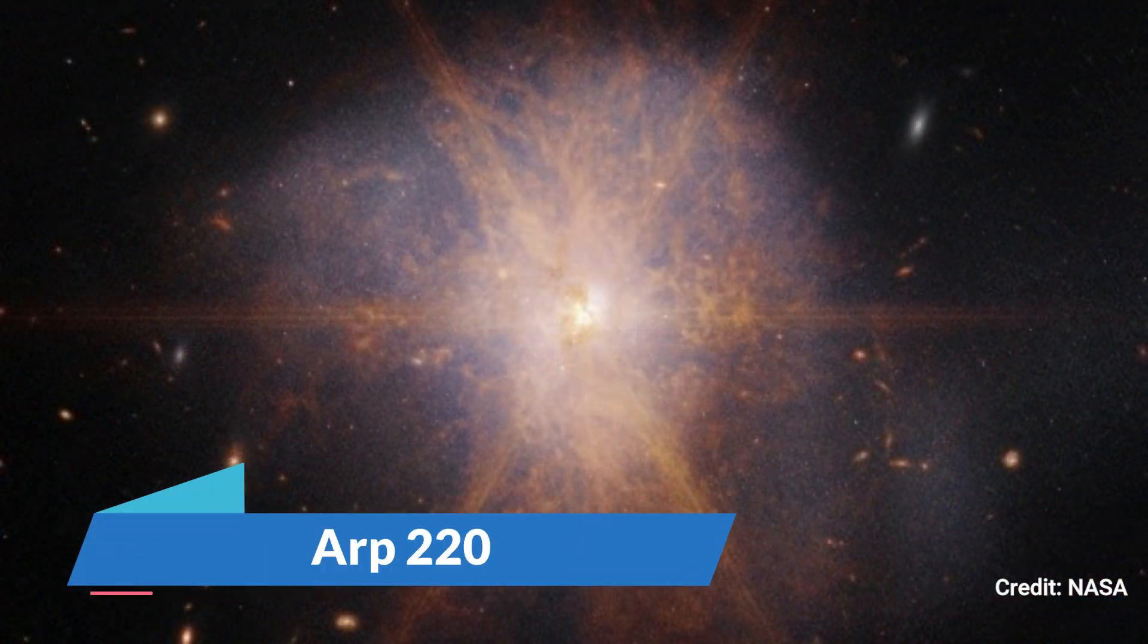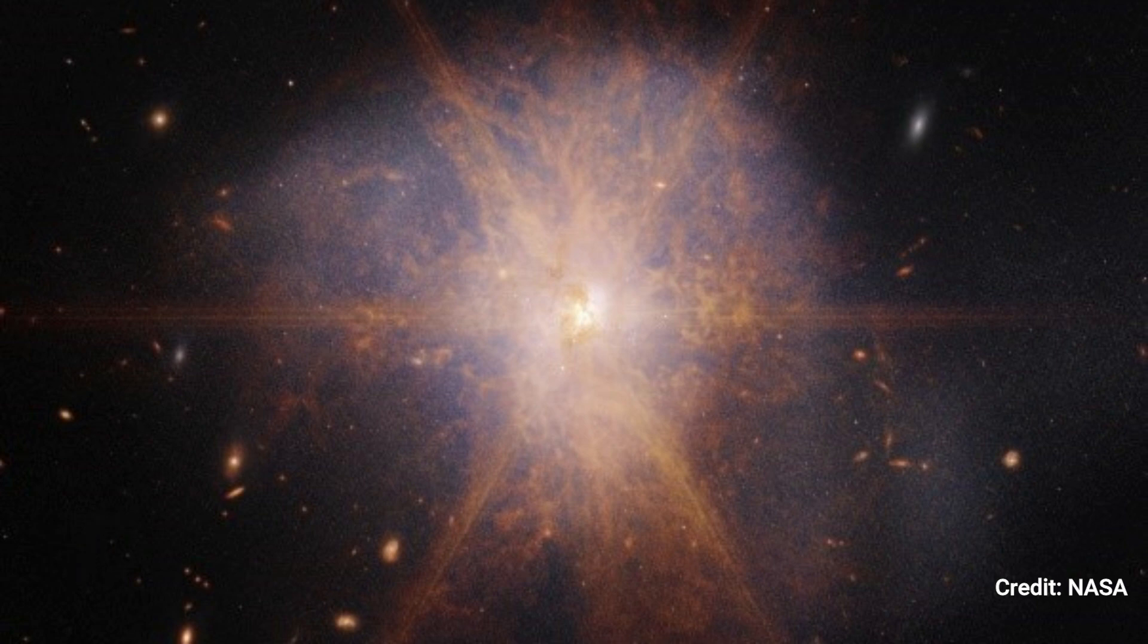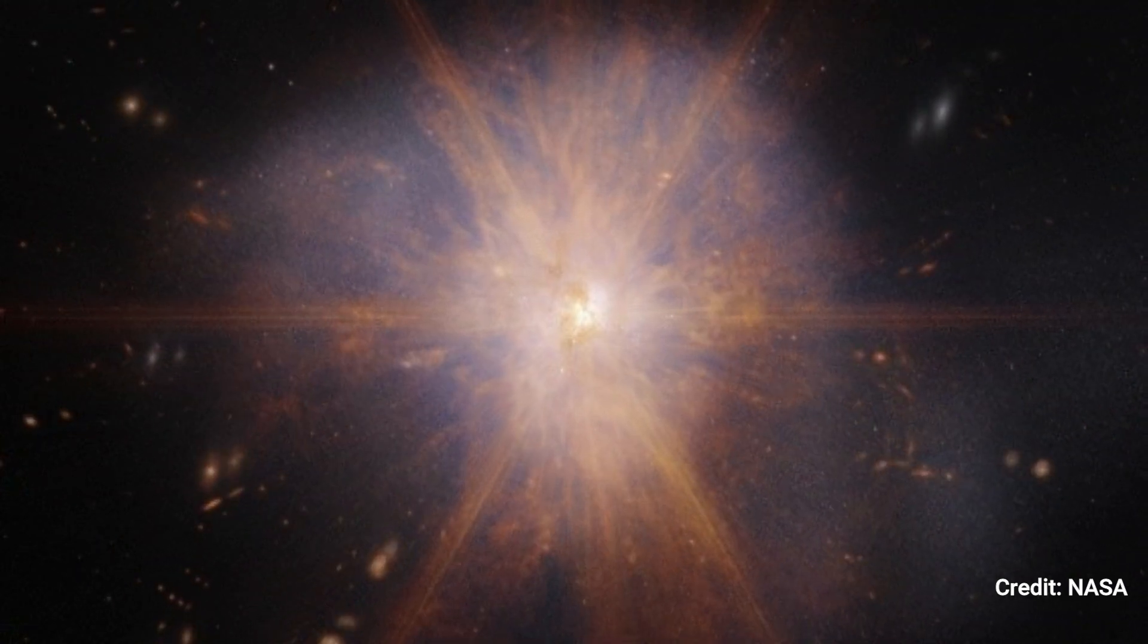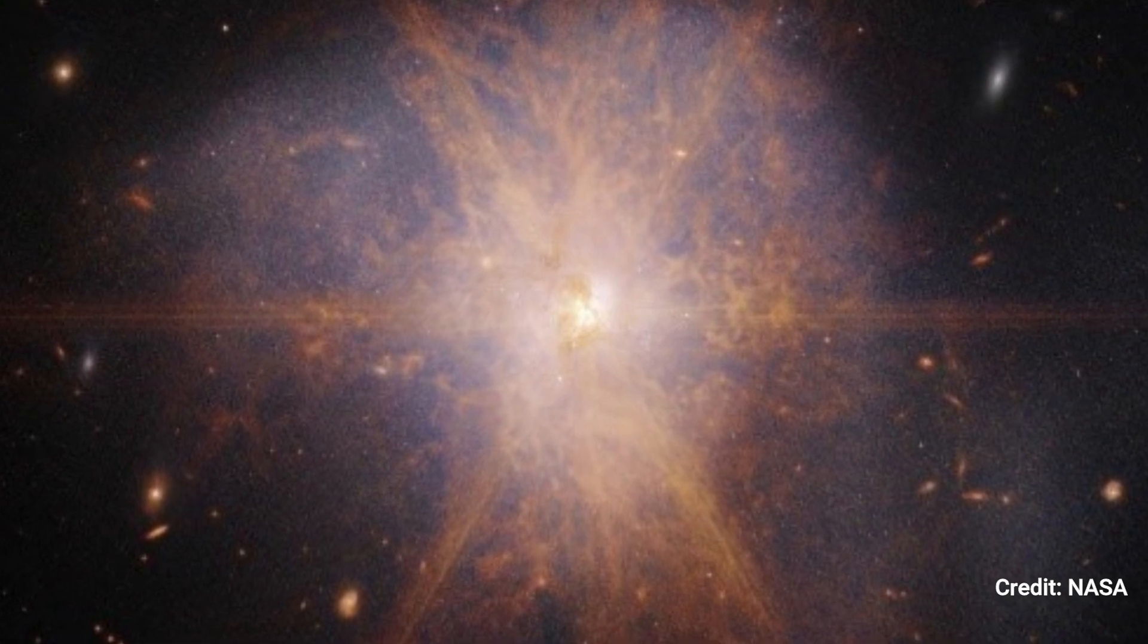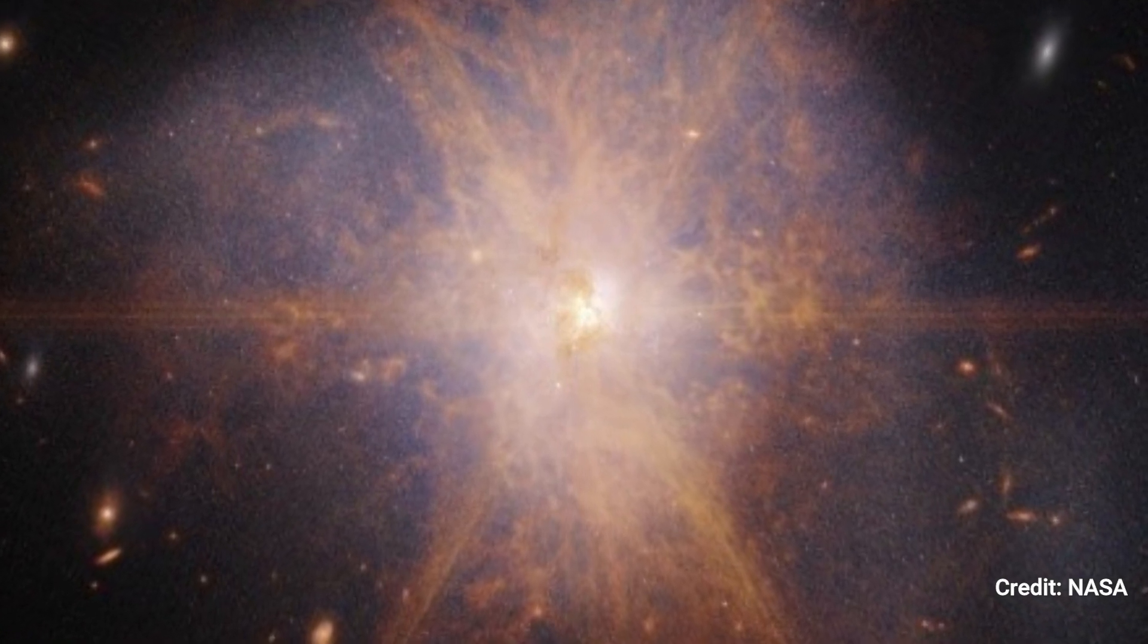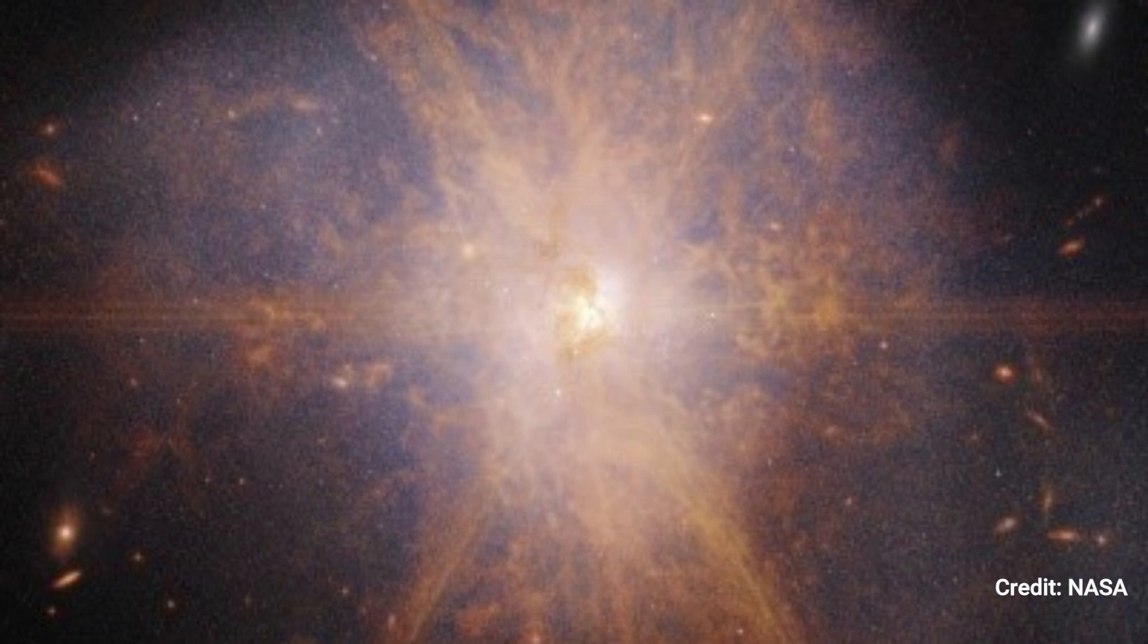ARP 220. In this image from NASA's James Webb Space Telescope, ARP 220 shines like a dazzling beacon amidst a sea of galaxies. ARP 220, which is actually two spiral galaxies merging, shines brightest in infrared light, making it a perfect target for Webb.